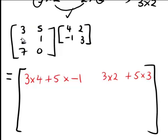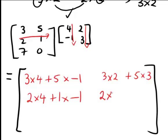And same idea, second row of A, first column of B, to get the element in the second row, first column here, gives 2 times 4 plus 1 times negative 1. While second row of A, second column of B, becomes 2 times 2 plus 1 times 3.